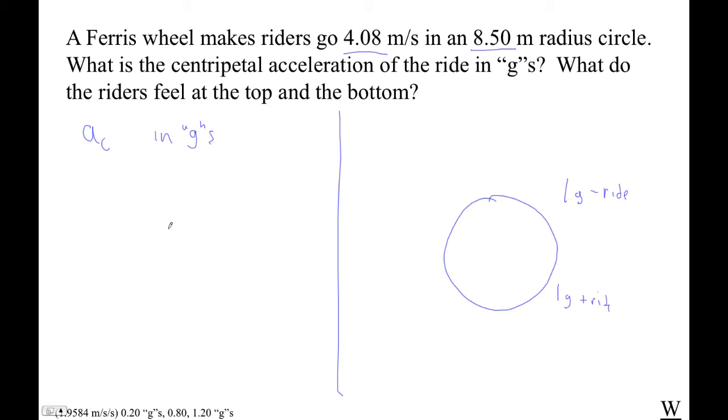Okay, so let's just go ahead and do that. Since we have velocity and radius, we'll use v squared over r. So 4.08 squared divided by 8.5. Let's get that 4.08. Oh, I've got to turn the calculator on. The calculator fell asleep. I was so boring that I put my calculator to sleep. Okay, this is 1.9584.